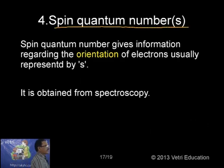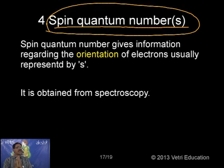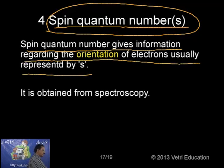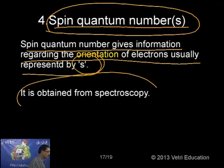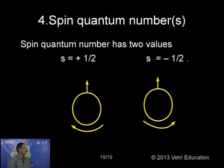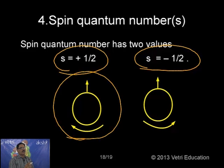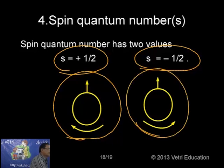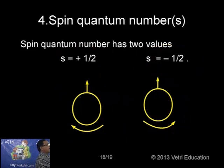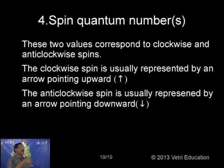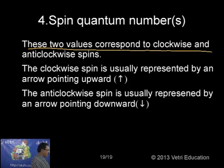The spin quantum number gives information regarding the orientation (spin) of the electron, usually represented by s. It is obtained only from spectroscopy. The spin quantum number has two values: s = +½ (clockwise spin) and s = −½ (anticlockwise spin). Conventionally, clockwise spin is represented by an arrow pointing upward and anticlockwise spin by an arrow pointing downward.